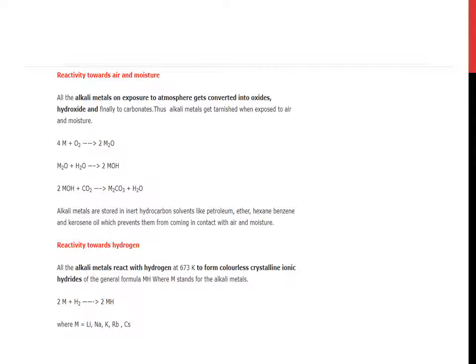Reactivity towards hydrogen. All the alkali metals react with hydrogen to give colorless crystalline ionic hydrides of the formula MH, where M is alkali metal.